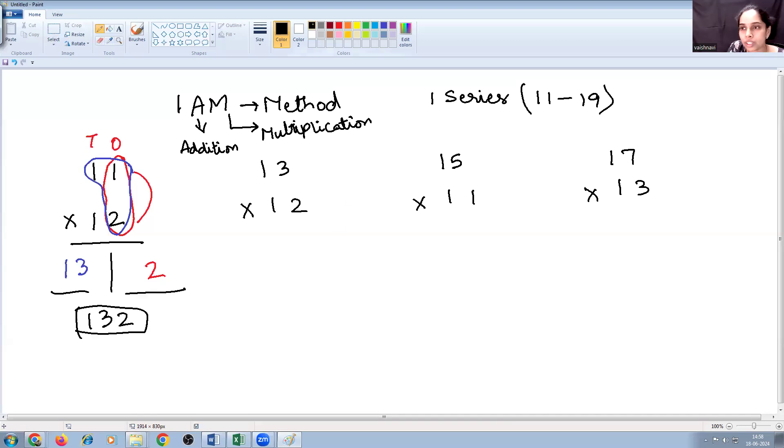Now let us go about with the next example. So now, the right portion of the answer is procured by multiplying this. 3 into 2 is what? 6. And the left portion of the answer is procured by adding these. So 13 plus 2 is how much? 15. So your answer is 156.